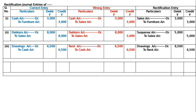Thus, the rent of a proprietor's residence paid by the business and debited by mistake to rent account is rectified. Moving on to error four.